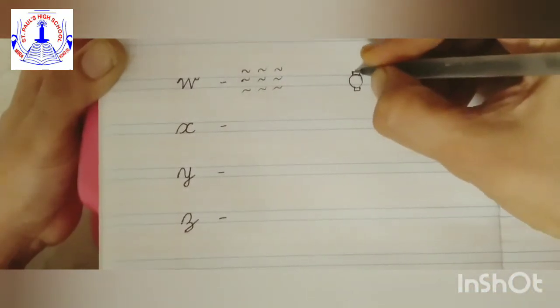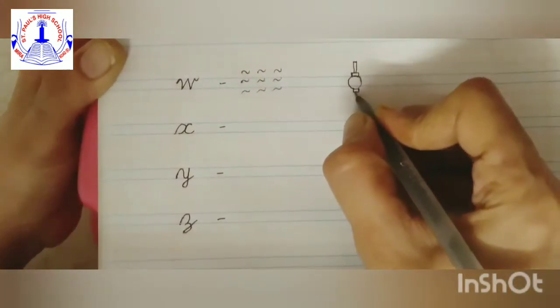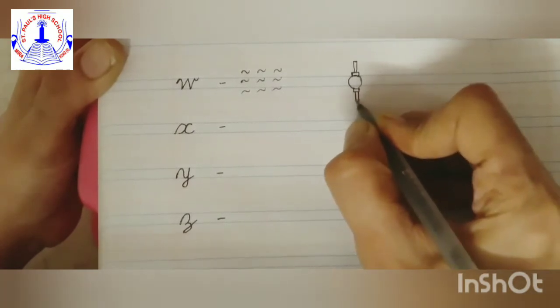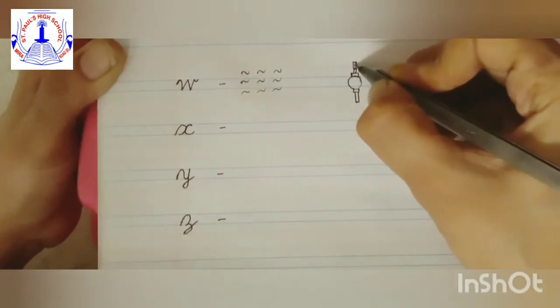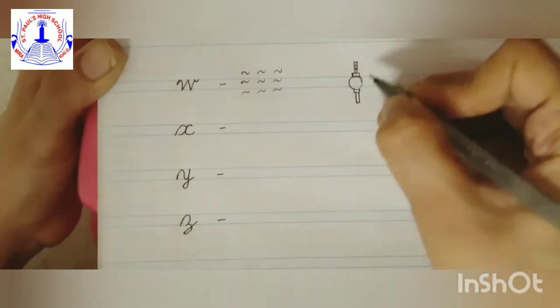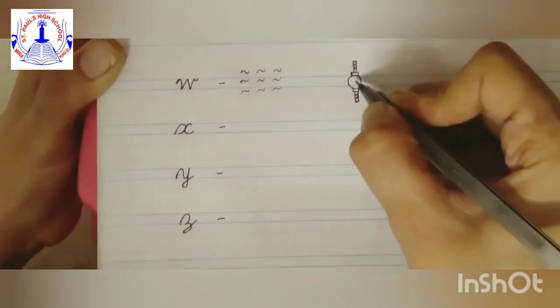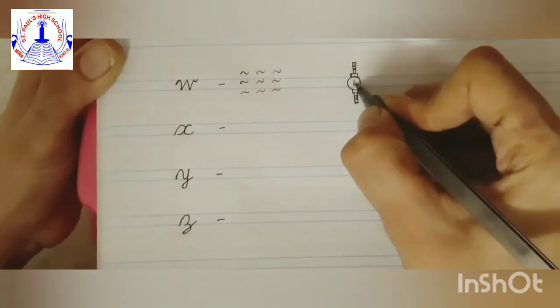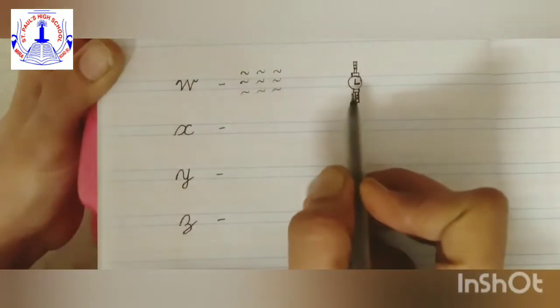And inside the strip just draw a dot. Okay, and here is your watch. W for water, W for watch.